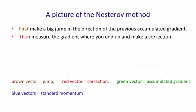So here's the picture when we first make the jump and then make a correction. Here's a step in the direction of the accumulated gradient. So this depends on the gradient we'd accumulated on our previous iteration. We take that step.